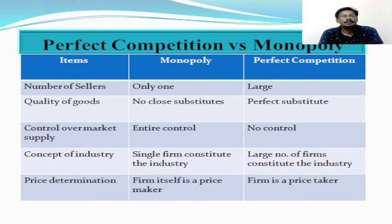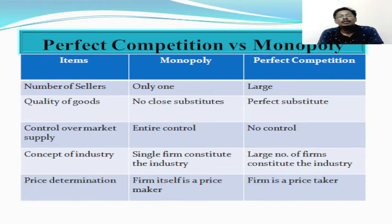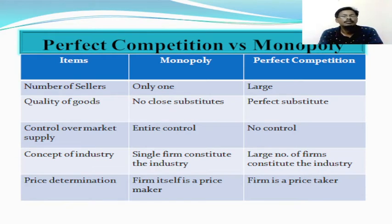One of them relates to number of sellers. In case of monopoly, there is only one single seller or single firm. This is due to the restrictions imposed by the government or the introduction of licensing system. But in case of perfect competition, no such restrictions are imposed by the authority as there is no government intervention, and the number of firms becomes large.